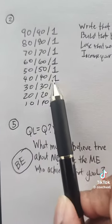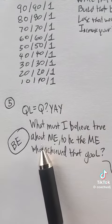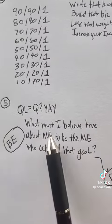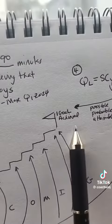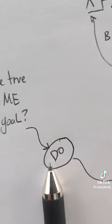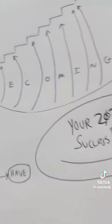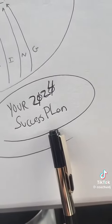So your first steps after you pick a goal and the time period, you're going to ask yourself this clarity-rich question: What must I believe true about me to be the me who achieved that goal? You identify and become it, then you do it, and then you have it. This is your 2024 success plan.